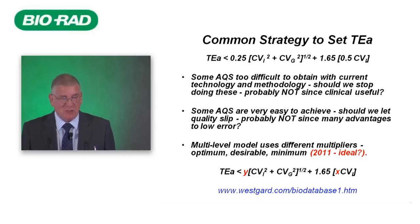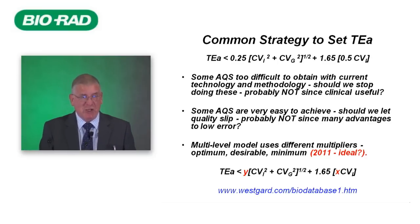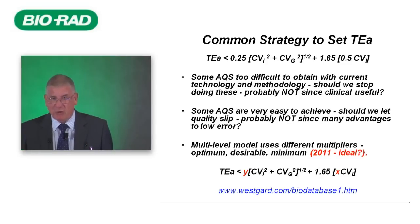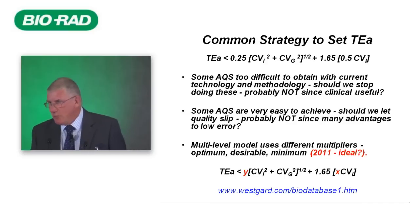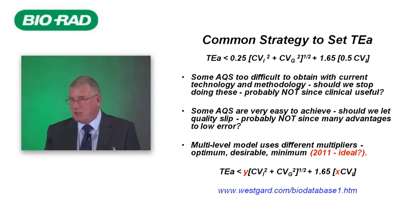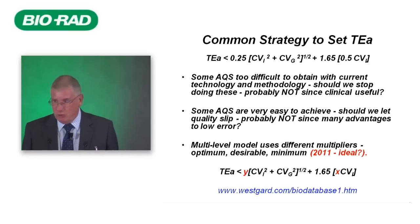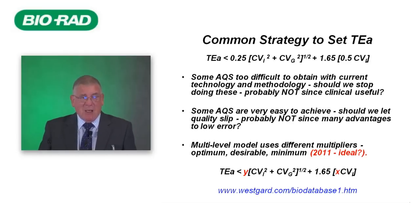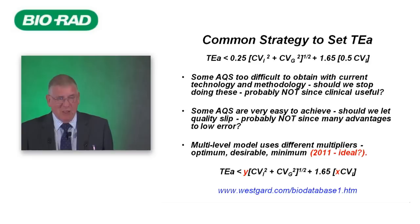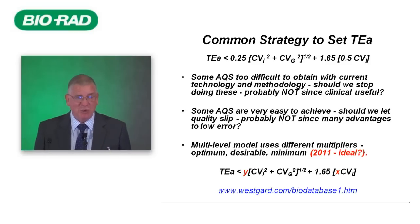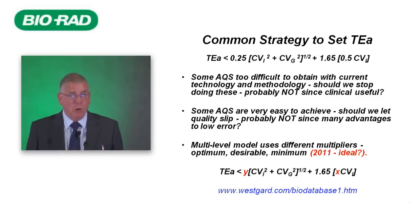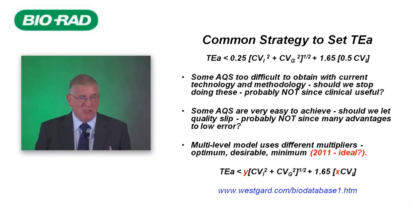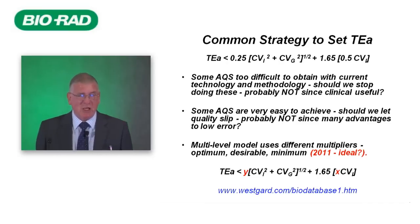If we use this formula, some quality specifications generated are very difficult to obtain with current technology — for example, for sodium, chloride, and calcium. Should we stop doing these tests because they don't meet analytical quality specifications based on biological variation? No, because we do get clinically useful data. Conversely, some quality specifications, for example for triglycerides or enzyme activities, are very easy to achieve. Should we let quality slip? Again no, since there are many advantages to having error or uncertainty lower than the analytical quality specification. Of course, we can have multi-levels using different multipliers: optimum, desirable, minimum.